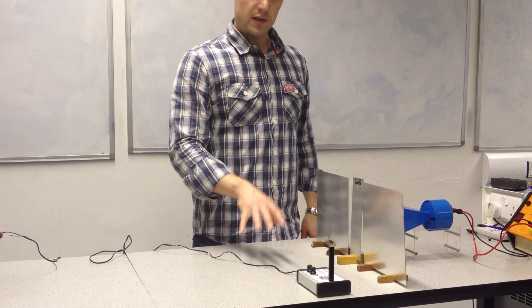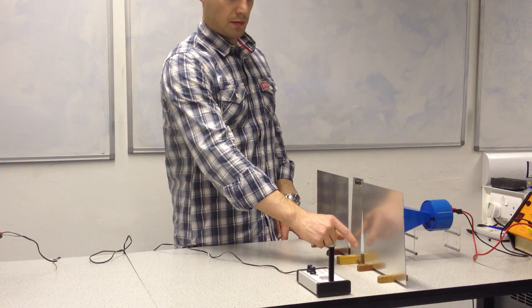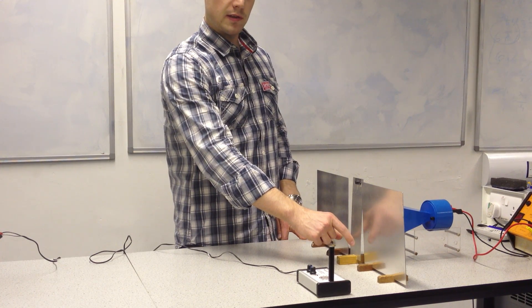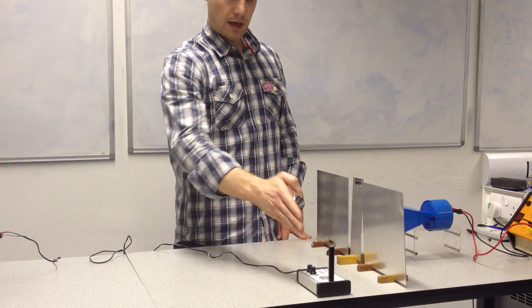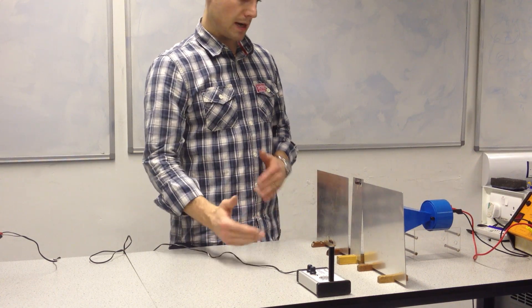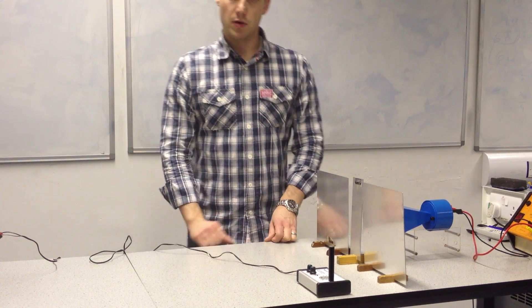So that's our experiment, two source interference, two sources being created by these slits in the aluminum sheets, and we're receiving our maximum or minimum with the microwave probe.